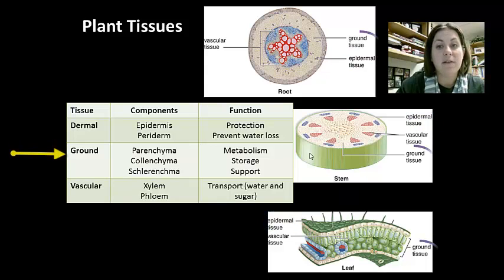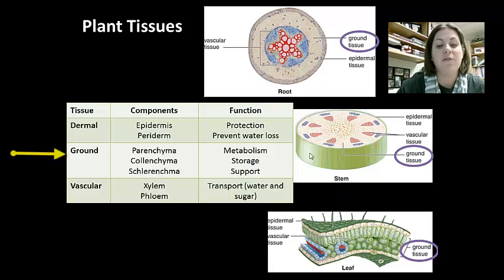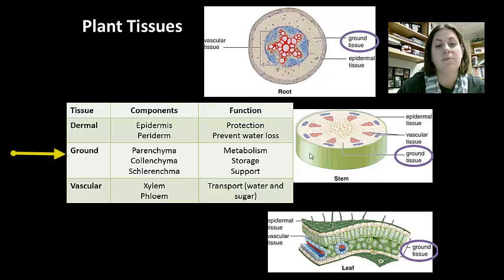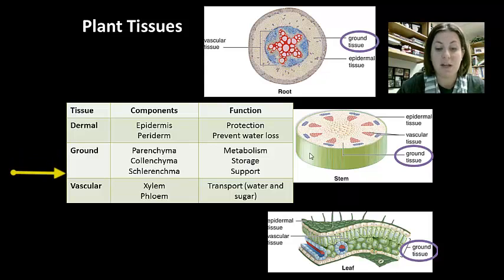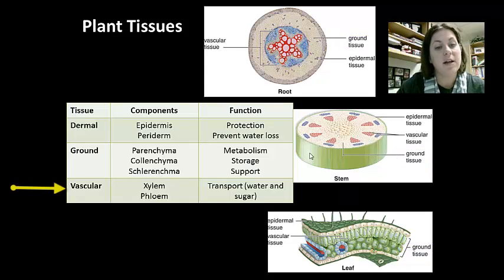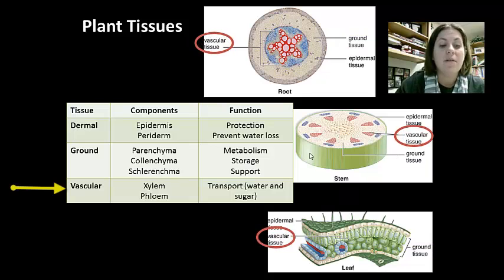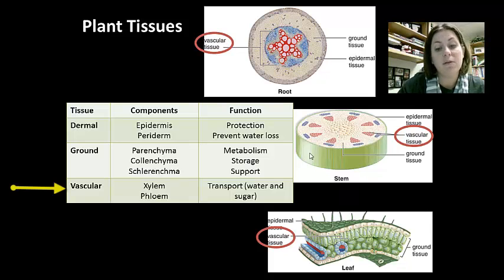Next is the ground tissue, which makes up the bulk of the plant and performs many functions such as metabolism like photosynthesis, storage, and support. The last type is vascular tissue, composed of xylem and phloem, which is important in transporting nutrients like water, sugar, and minerals.